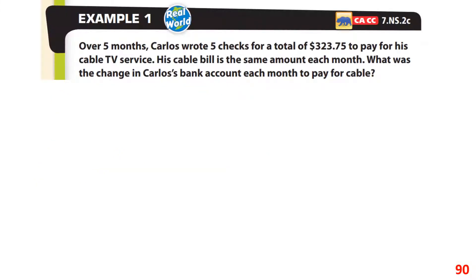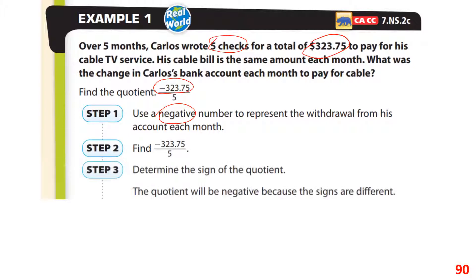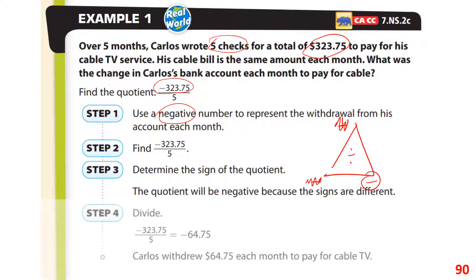Over five months, they wrote five checks for a total of $323.75. The cable bill came out to the same each month, so that's a division problem. The negative number represents a withdrawal of money each month. Using the Xero triangle, a negative divided by a positive is a negative, so the answer is negative $64.75 — a withdrawal of $64.75 per month.